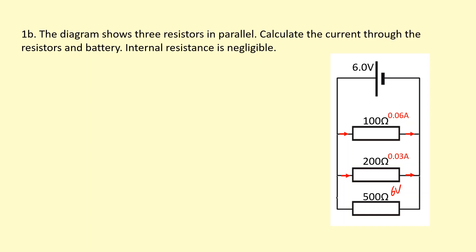We need to work out the current through the new branch. If I apply Ohm's law: 6 over 500, that gives me 0.012 amps — that's what's flowing down this branch. It's going to join up with the 0.03 amps here, and then join up with the 0.06 amps here, to give us a total of 0.102 amps, compared to the 0.09 that was flowing through it last time. So the current has increased, and this is what we expect, because we've added an extra branch for the current to flow through.